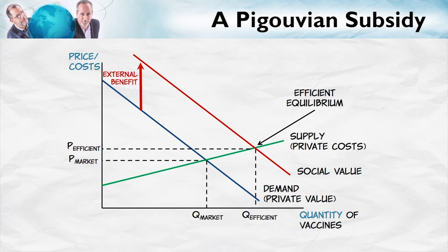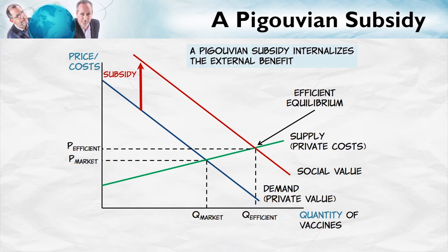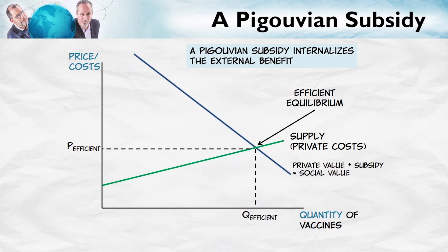Do you remember how we analyze a subsidy? A subsidy can be analyzed as a shift up in the demand curve — we reduce the cost to consumers, which increases their willingness to pay for the product. So if we reduce the cost to consumers of getting a flu shot by subsidizing flu shots, that increases demand. We set the subsidy to be the same level as the external benefit. The Pigouvian subsidy shifts the demand curve up until the private value plus the subsidy equals the social value. With a correctly set subsidy — equal in size to the external benefit — the market equilibrium will once again be the efficient equilibrium.